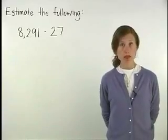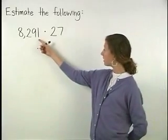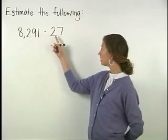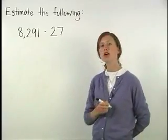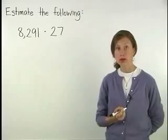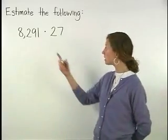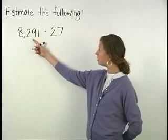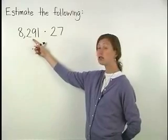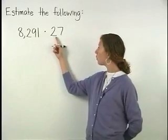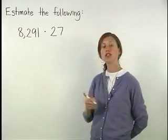To estimate the product of 8,291 times 27, first round each number so that each number contains only one non-zero digit. So in this case, we'll round 8,291 to the nearest thousand and we'll round 27 to the nearest ten.